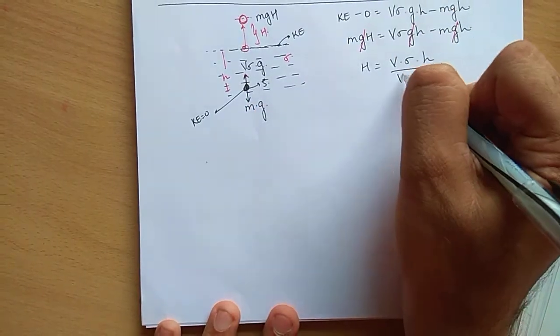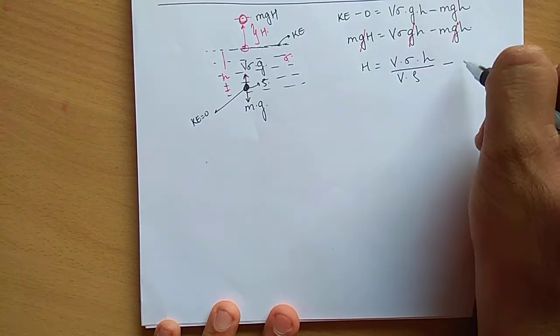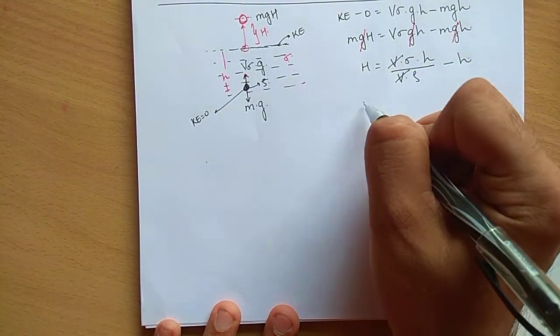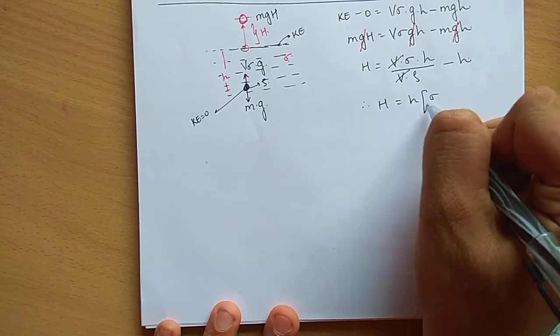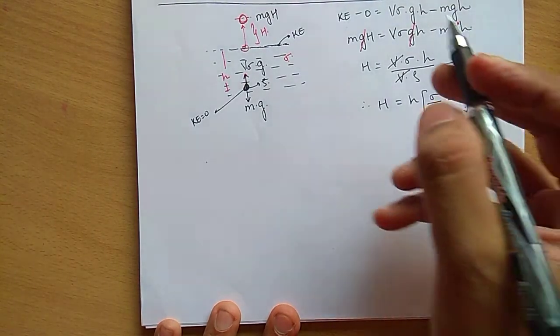Mass can be written as volume of this object into density of this object, that is rho. Minus m by m, yeh cut ho jayega, so this will be v by v. Aapko h' aa jayega: h' equals h times (sigma by rho minus 1).